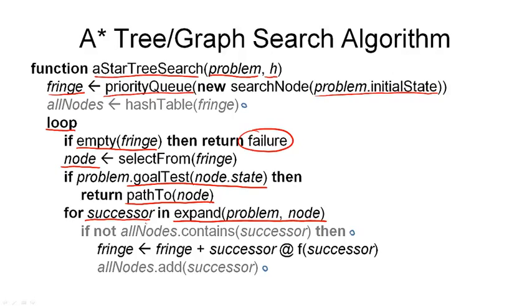And then for the tree search version of this algorithm, we simply have to add that new successor to the fringe. So we extend our current fringe with the new successor, and the place where we queue this new successor in our priority queue is, of course, the F value of that node.